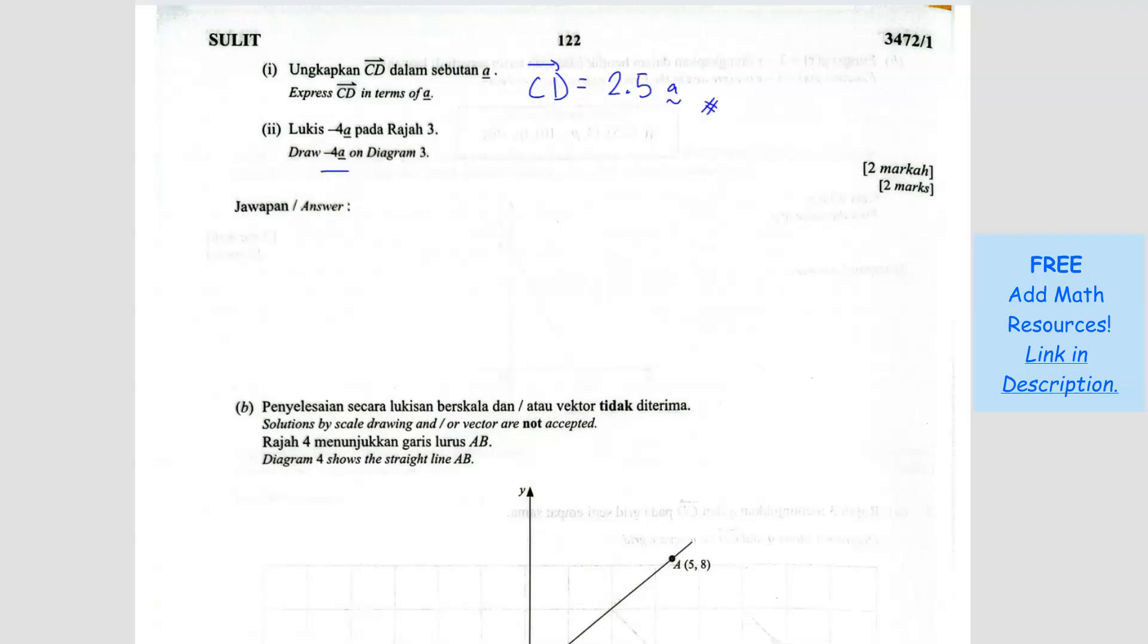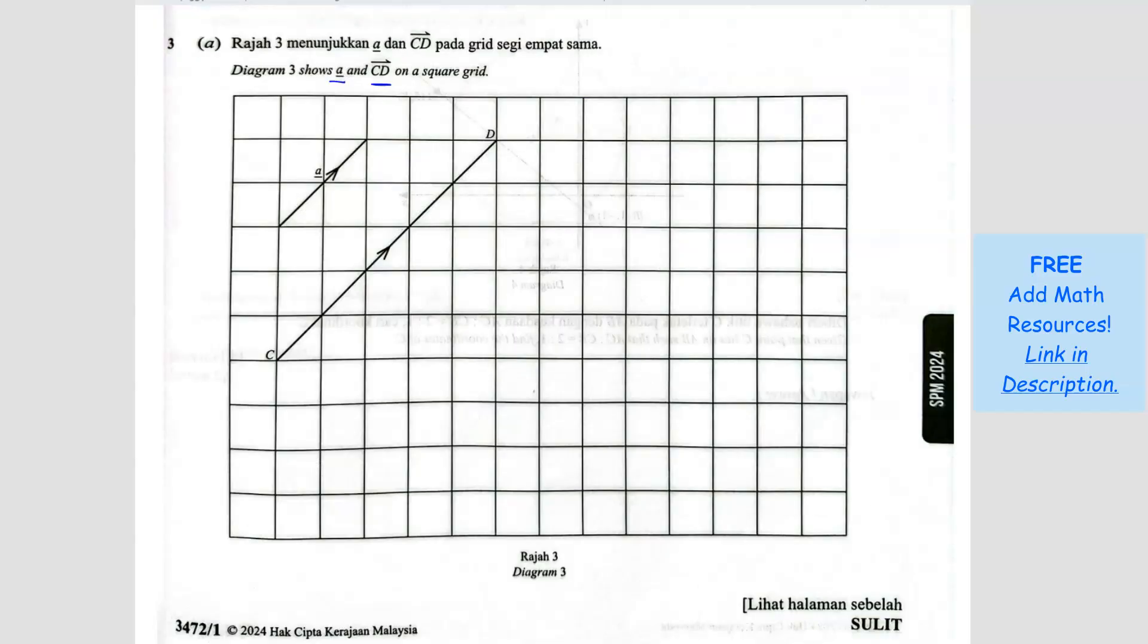Draw negative 4A on diagram 3. So negative 4A means what? Negative 4A means you are going the same vector as A, but opposite direction because it's negative. Negative means opposite direction and the coefficient is 4. That means it's 4 times longer than the vector A.